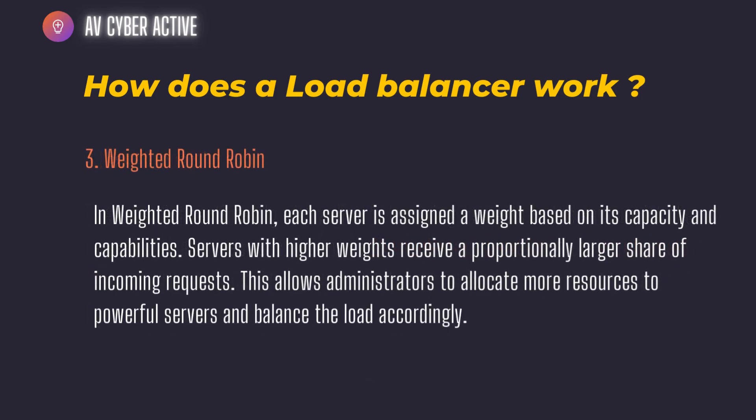Third is weighted round robin. In weighted round robin, each server is assigned a weight or priority based on its capacity and capabilities. The servers with higher weights receive a proportionally larger share of incoming requests. This allows administrators to allocate more resources to powerful servers and balance the load accordingly. What it means is that your load balancer already knows which servers are capable of handling more traffic and redirects traffic to them so that the load is balanced efficiently.